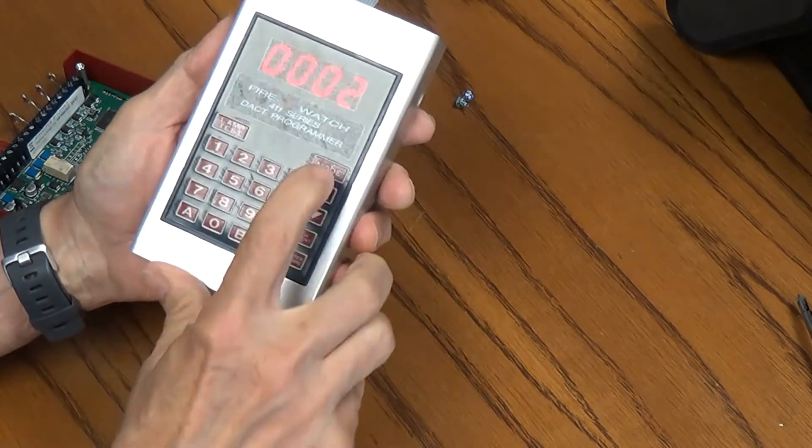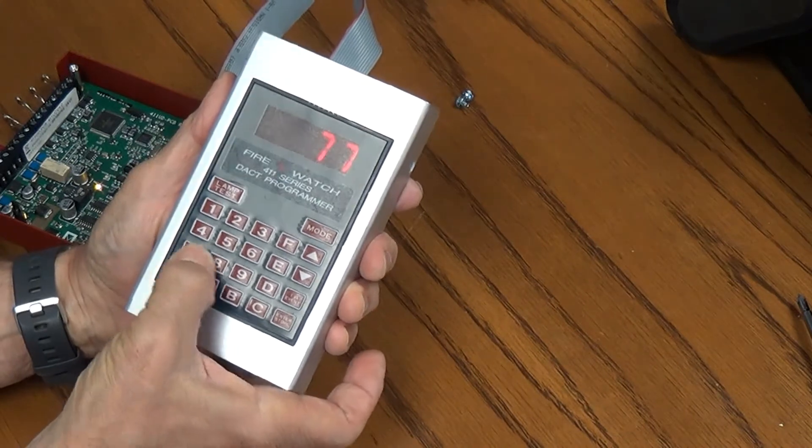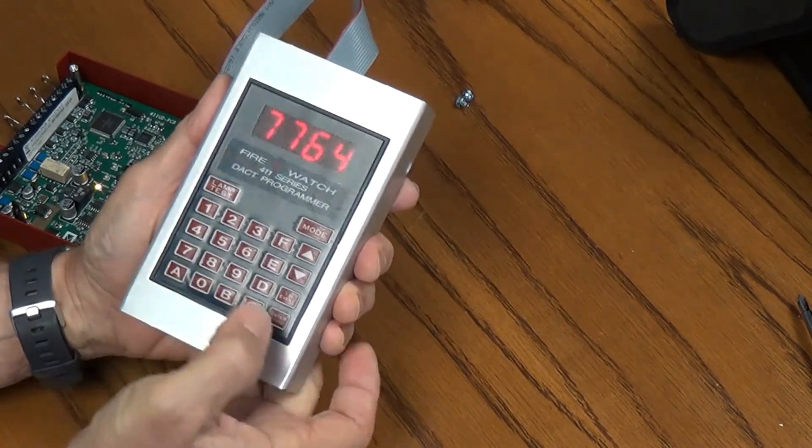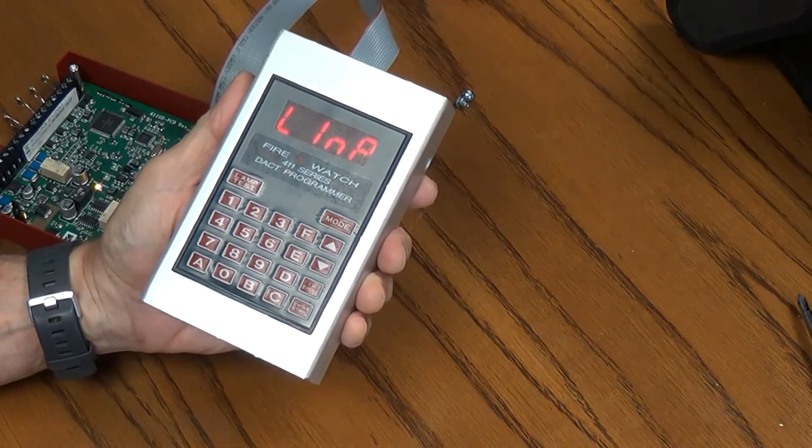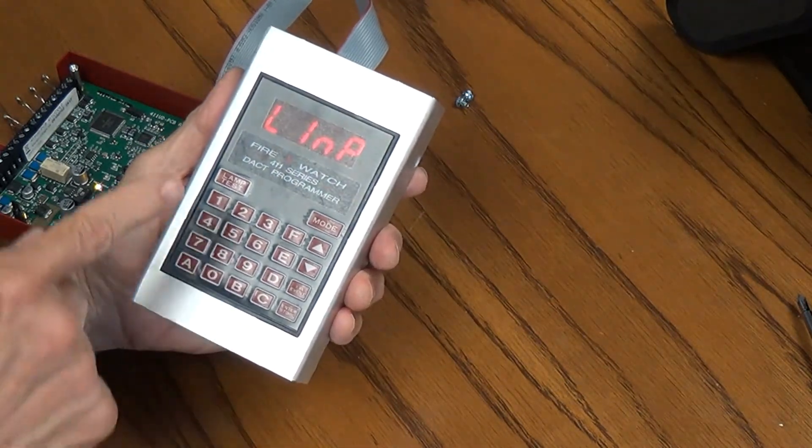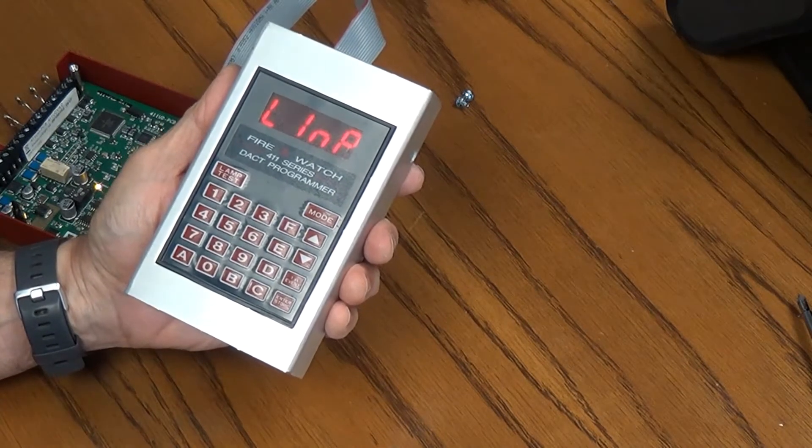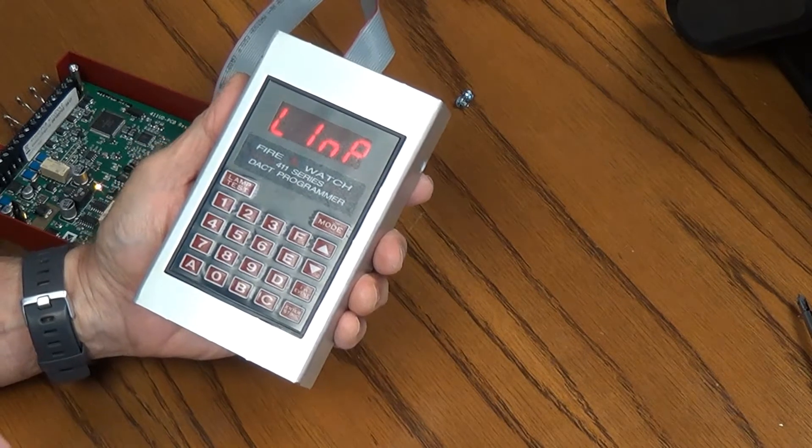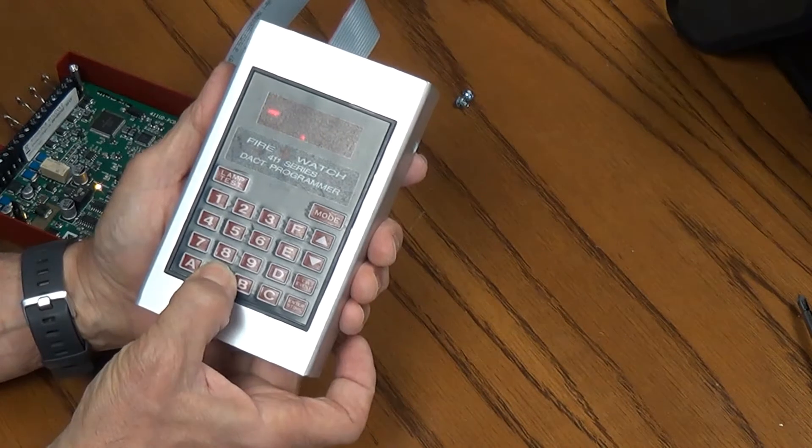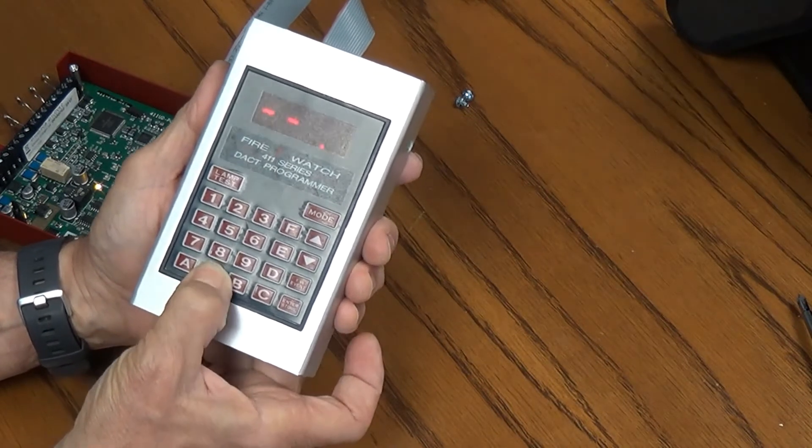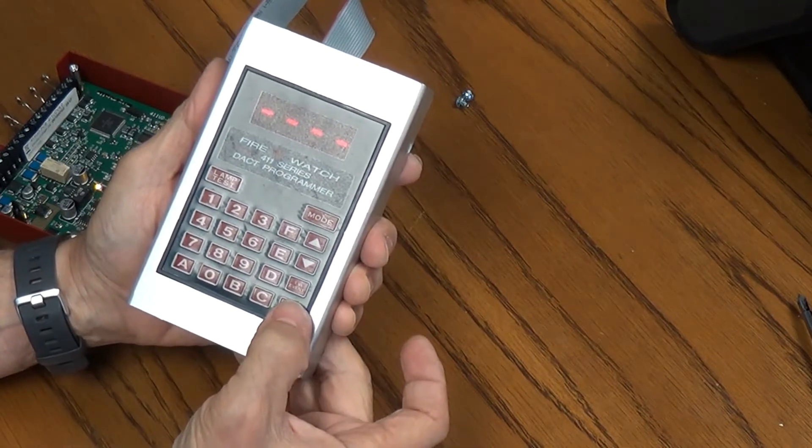What we're going to do is press mode, 7, 7, 6, 4, and enter. So now we're entering into the programming mode. The next thing it's asking for is a password or passcode. The default passcode for the 411 dialer is all zeros. So as you start typing this in, you'll see their dashes. And go ahead and press enter.